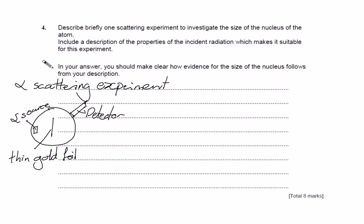Because these are alpha particles, they wouldn't be able to get through air — a few centimetres of air would absorb them. So this has to be under vacuum. Most of the particles would go through, however some would bounce back very, very rarely. So most of them pass straight through the gold foil, and every now and again one bounces back.